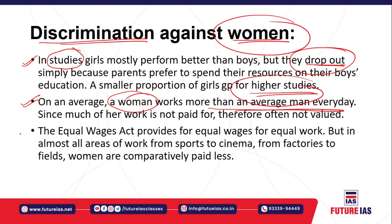In India, the parliament passed the Equal Wage Act, which says that irrespective of gender, every person should be provided equal wage for equal work. But in every field — cinema, factories, or any field — women are paid lesser salary or lesser remuneration. That is also a form of discrimination found in our society.